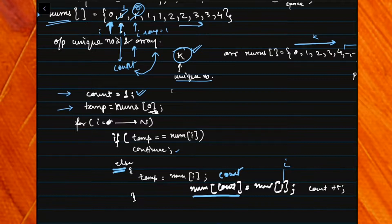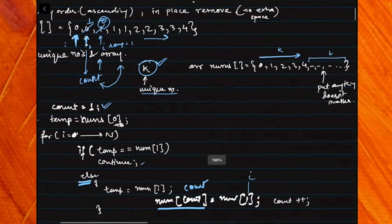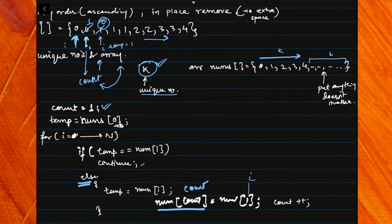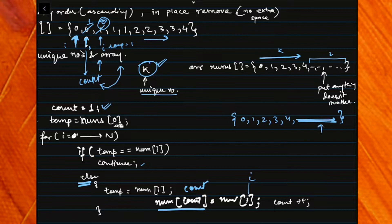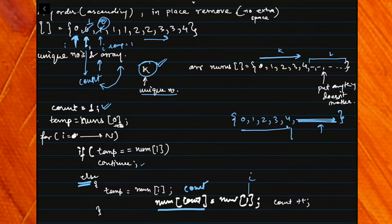This continues through the whole array. The first part will contain all unique elements, and the part beyond k will still have old values — but since the output isn't considered after k, we don't need to worry about that. Let's look at the actual code.